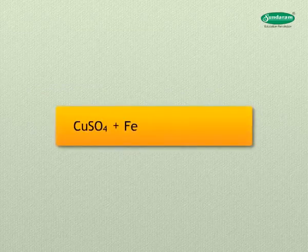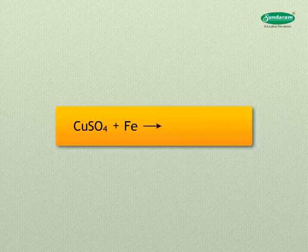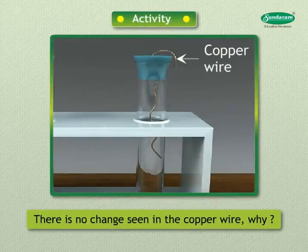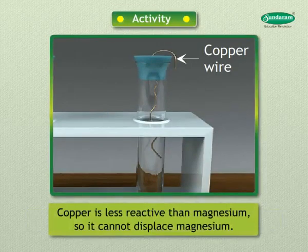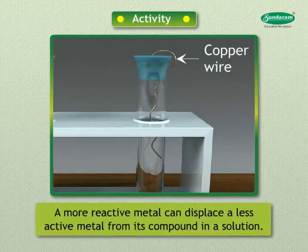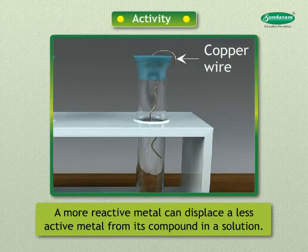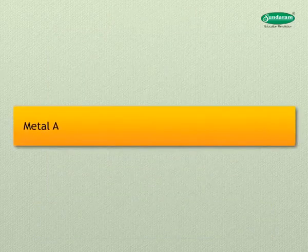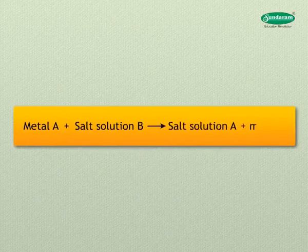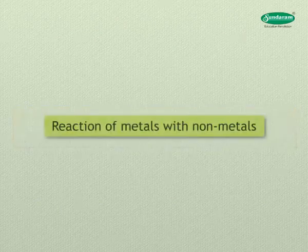The balanced equation is: CuSO₄ + Fe → FeSO₄ + Cu. There is no change seen in the copper wire because copper is less reactive than magnesium, so it cannot displace magnesium. A more reactive metal can displace a less active metal from its compound in solution: Metal A + Salt solution B → Salt solution A + Metal B.